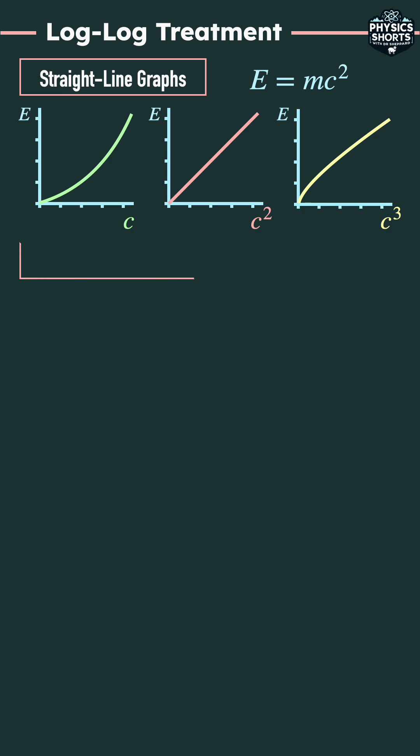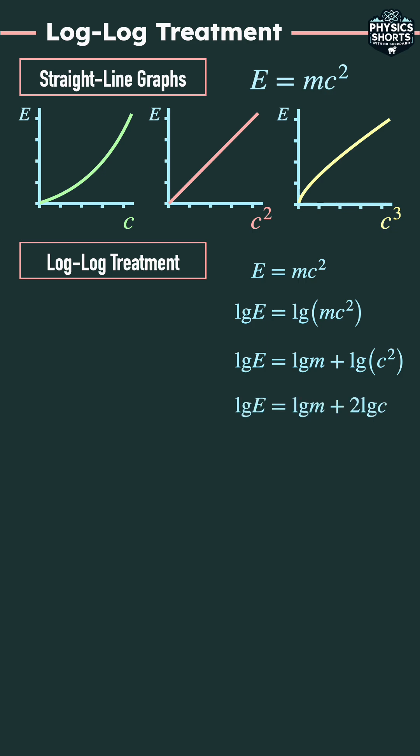But if we take logs of both sides instead, let's follow this through. E equals MC squared. So log E equals log of MC squared, expanding that, that's equal to log M plus log C squared. So log E equals log M plus two log C.